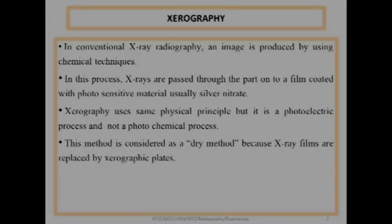In conventional x-ray radiography, an image is produced by using chemical techniques. In this process, x-rays are passed through a film coated with photosensitive material, usually silver nitrate.